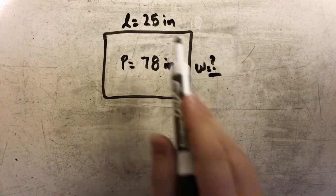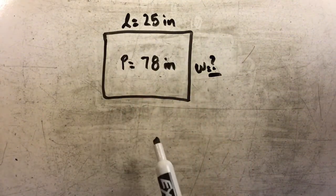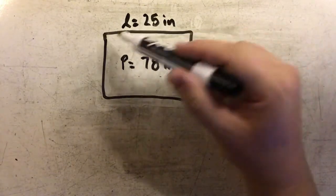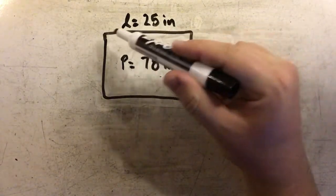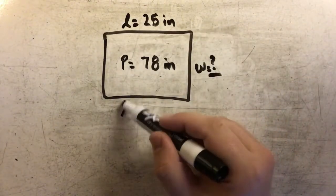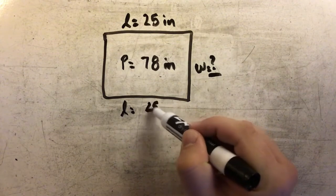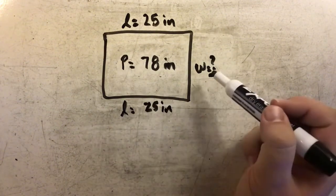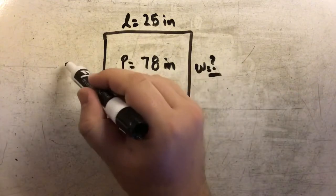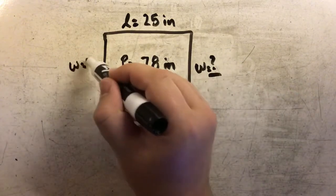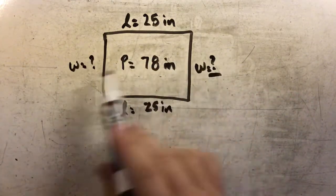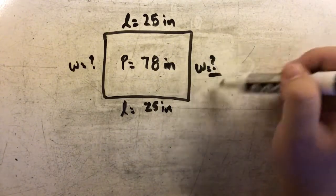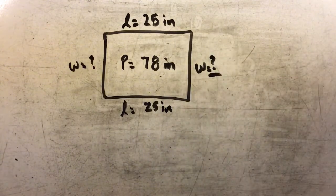In order to do that I'm going to have to do some reverse subtraction steps. If I know that this length is equal to 25, that means that this length on the opposite side also has to be equal to 25 inches. And if we don't know what this width is, we also don't know the width on the other side. So we're really trying to find two different sides, but we can do that by finding just the one width.